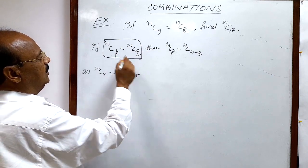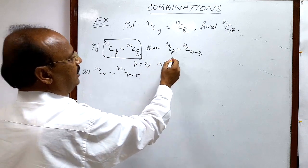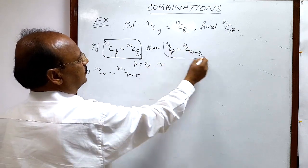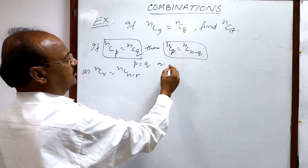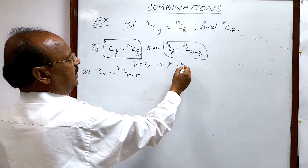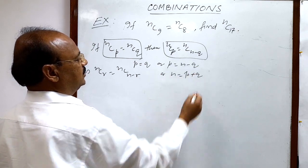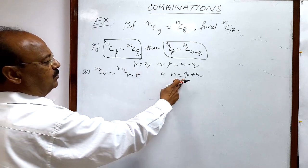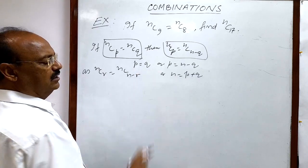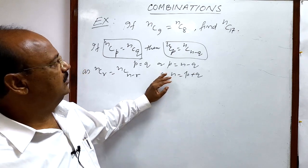So from here, by comparing these two results, these two combinations, you will get p is equal to q. Or when we compare this result, n is the same in both sides, so p is equal to n minus q, or n is equal to p plus q. So either p is equal to q, or p plus q is equal to n.